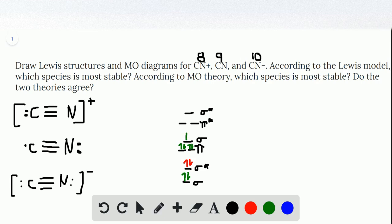For nine electrons, we put one in here, and for 10 electrons, we put another one in here. So since these last two electrons went into bonding orbitals, that's going to make it more stable.